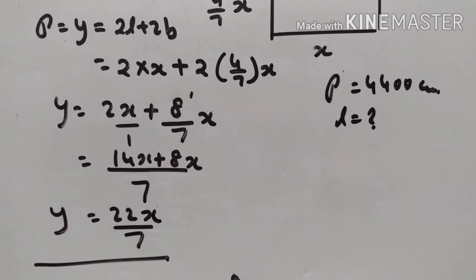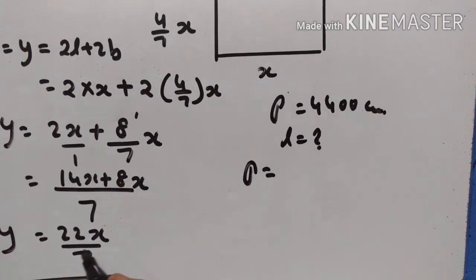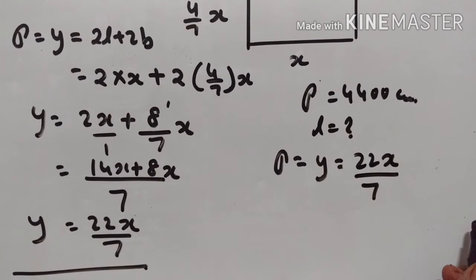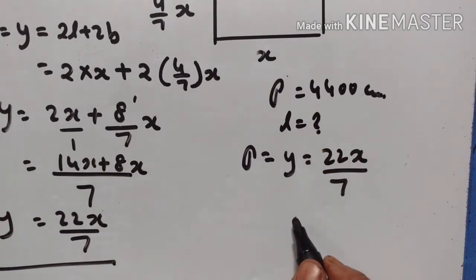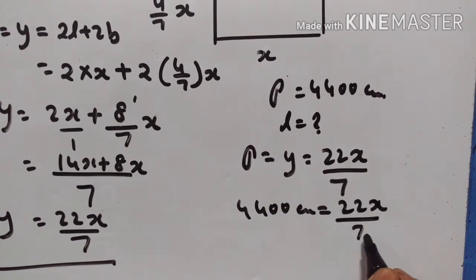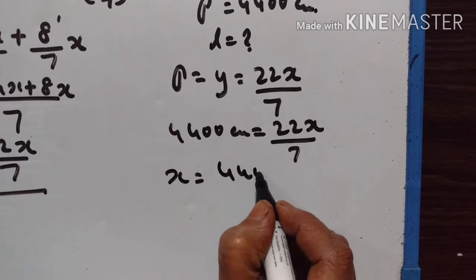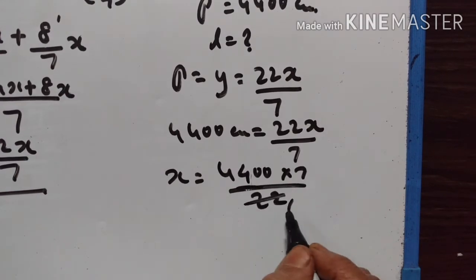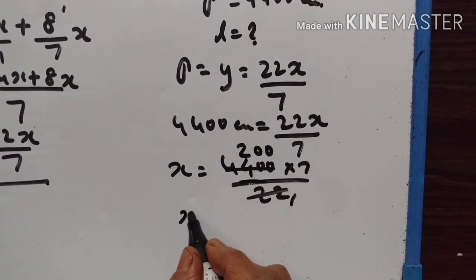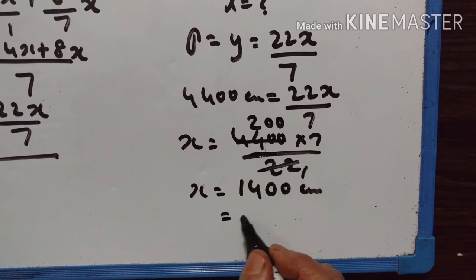So y is equal to 22x upon 7. This is the equation. Perimeter is equal to 4400 cm, so y is equal to 22x upon 7. Setting 4400 equal to 22x upon 7, x is equal to 4400 multiplied by 7 divided by 22, giving x equal to 1400 cm, which is equal to 14 meters.